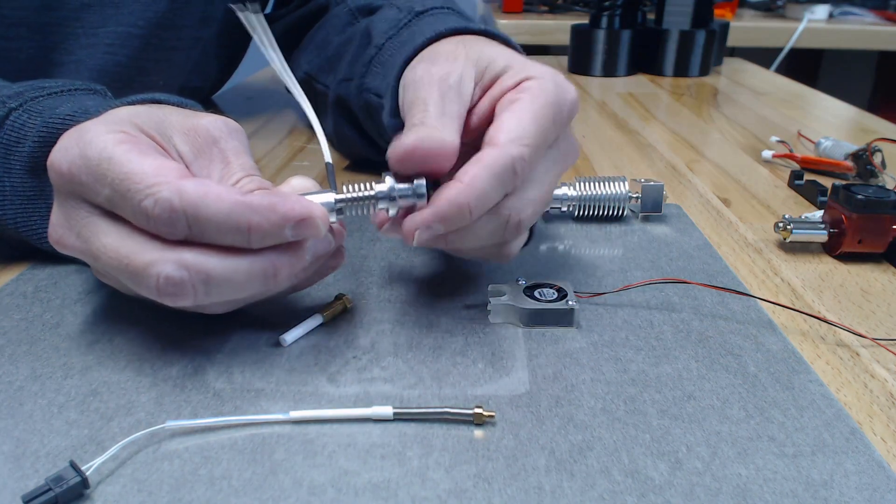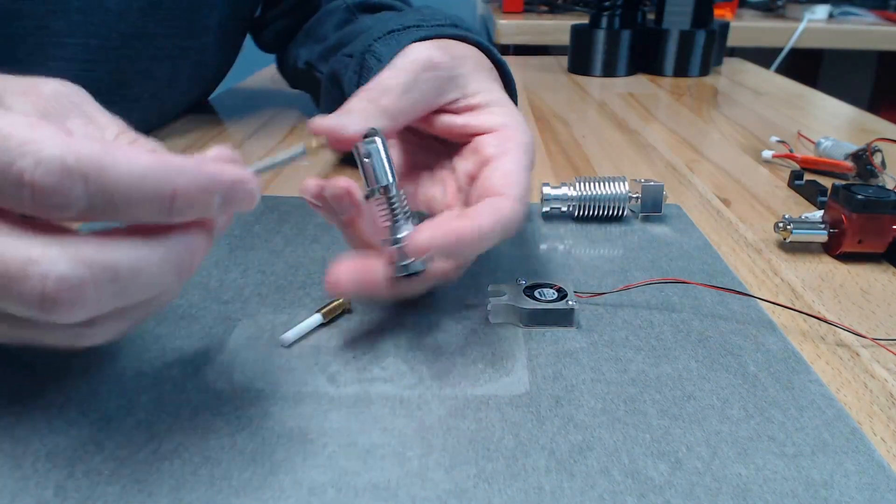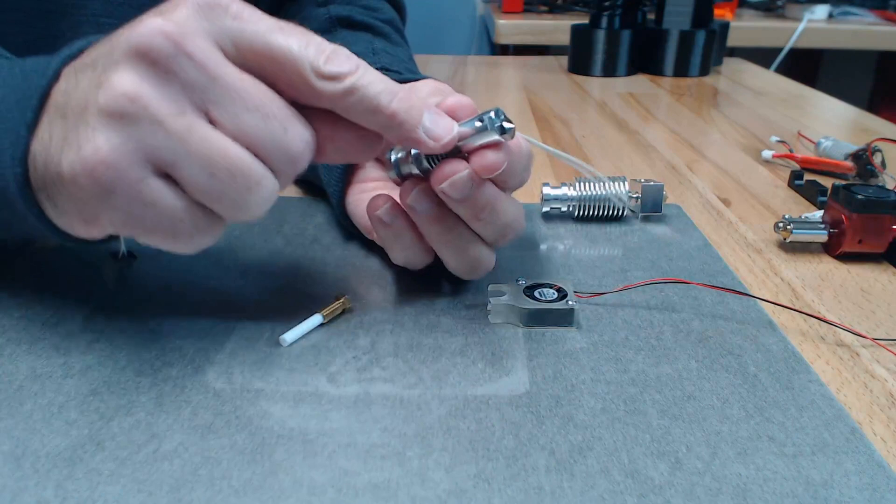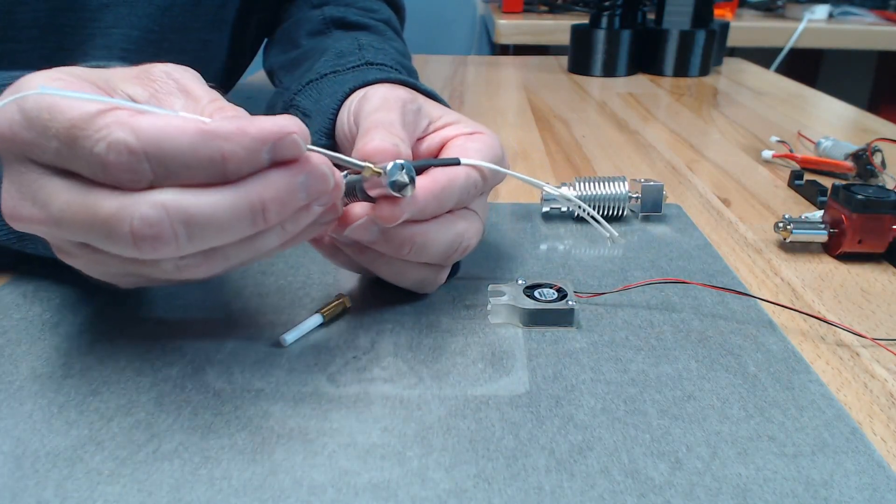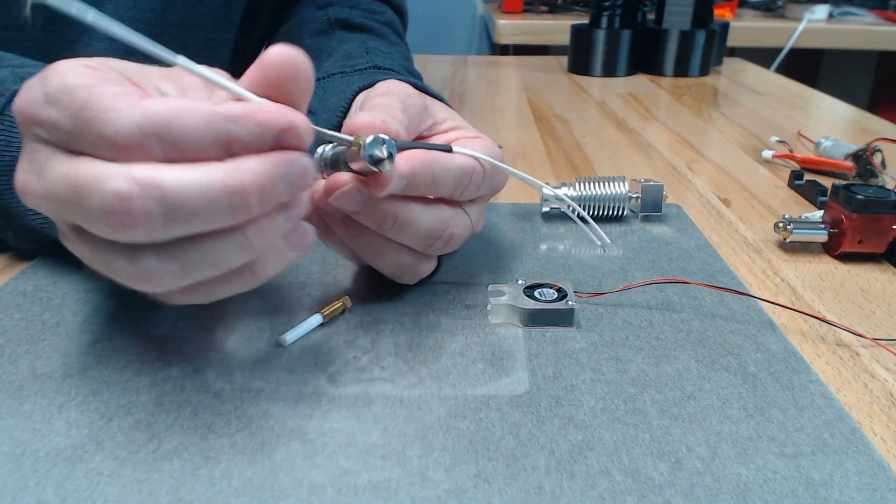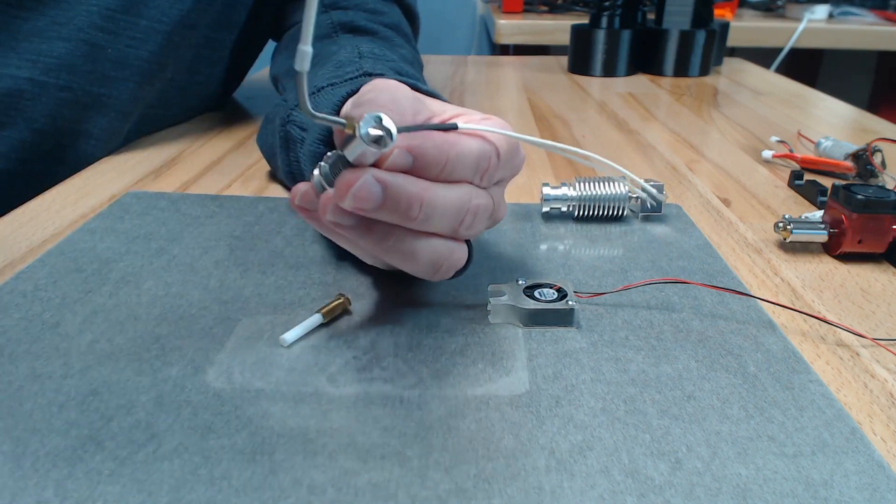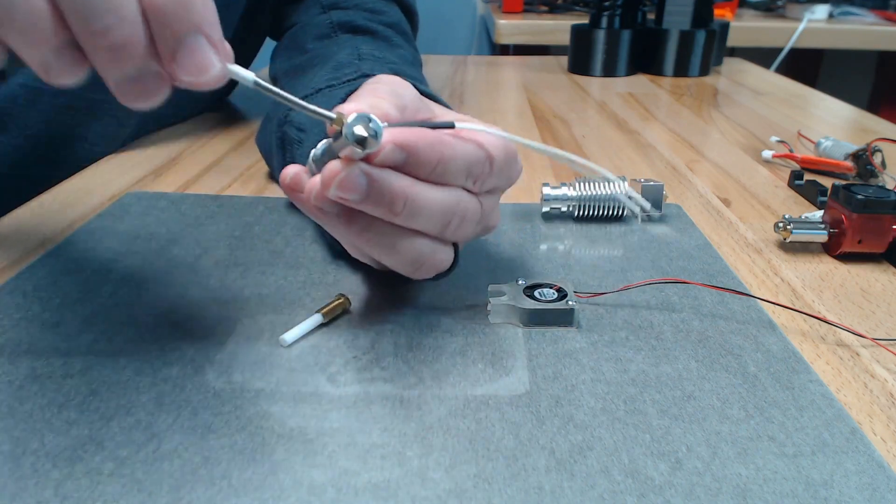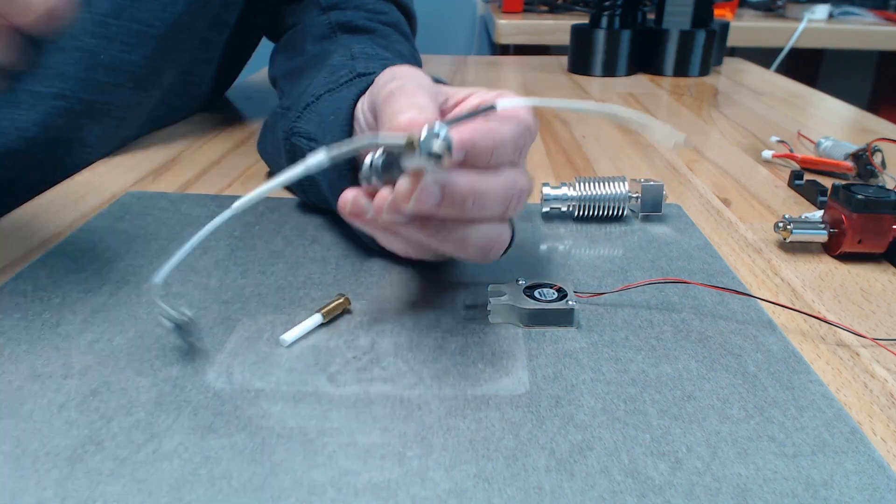Then we put on the collet adapter. On the side of the heater block you screw in the thermistor. And again, this is spring loaded and that will help you from accidentally breaking things.